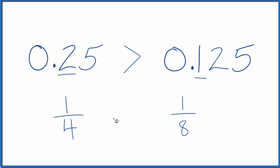That's the 1/4. One over four is greater than one over eight. Just like 0.25 is greater than 0.125. This is Dr. B. Thanks for watching.